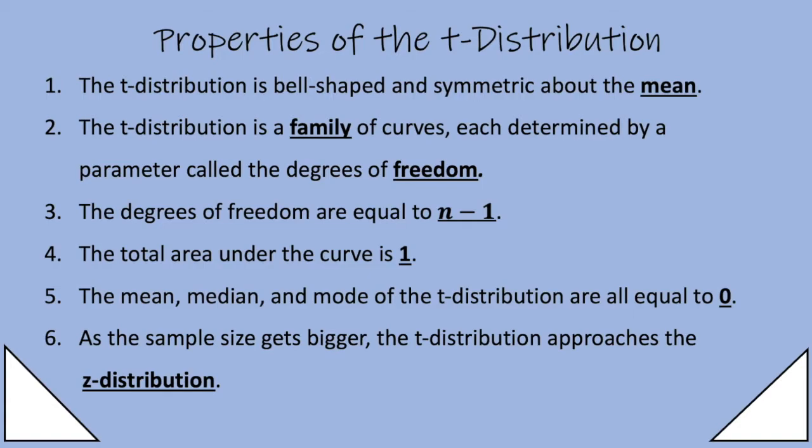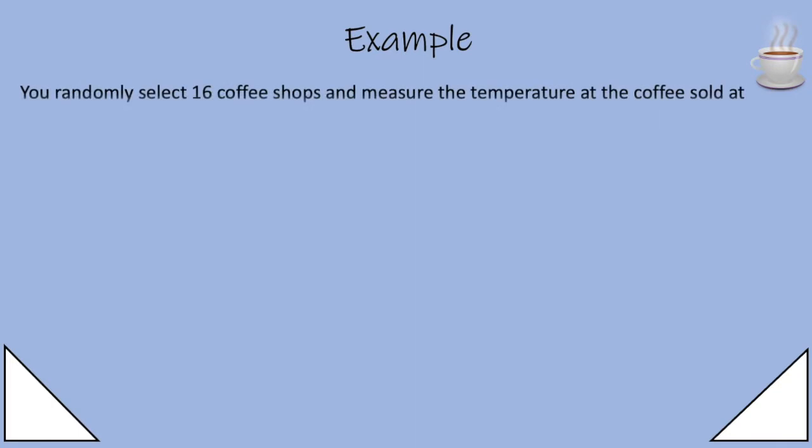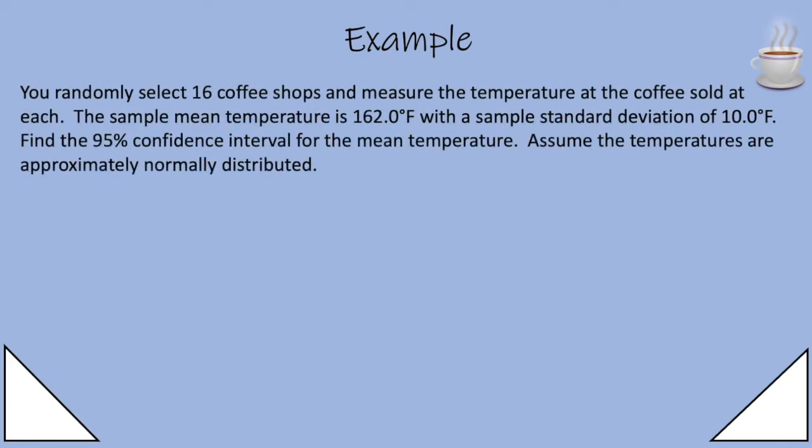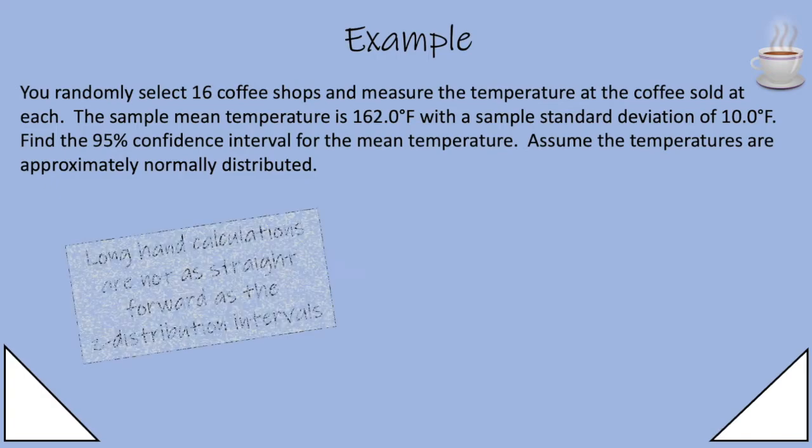So let's do an example. You randomly select 16 coffee shops and measure the temperature of the coffee sold at each. The sample mean temperature is 162 degrees Fahrenheit with a sample standard deviation of 10. So we're going to find a 95% confidence interval for the mean temperature. We'll assume the temperatures are approximately normally distributed.